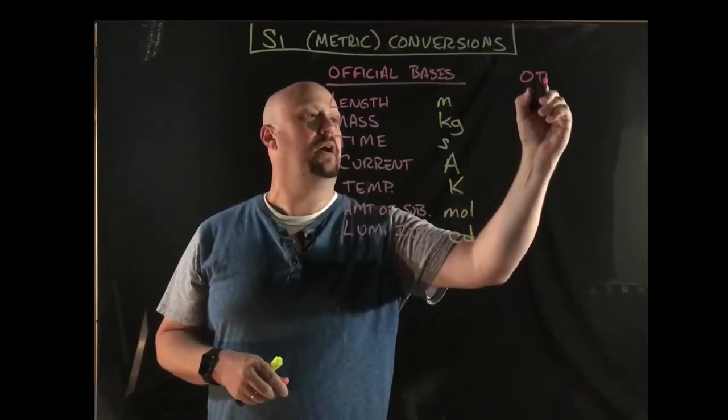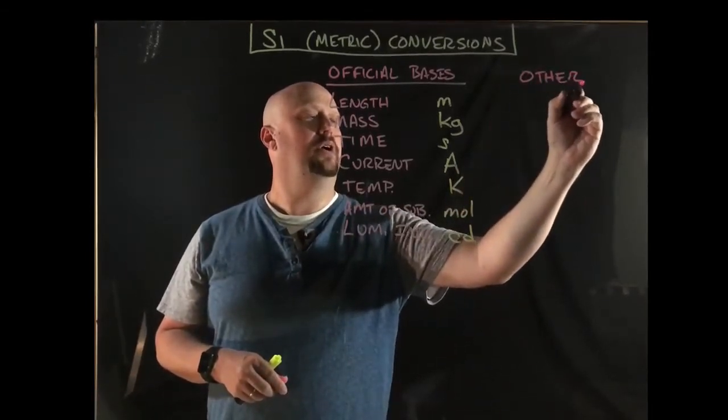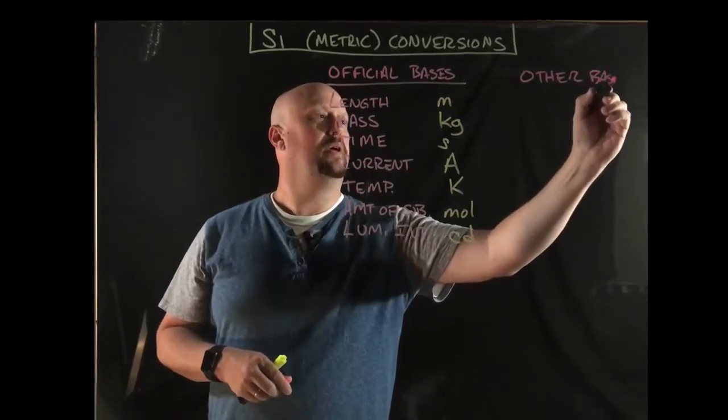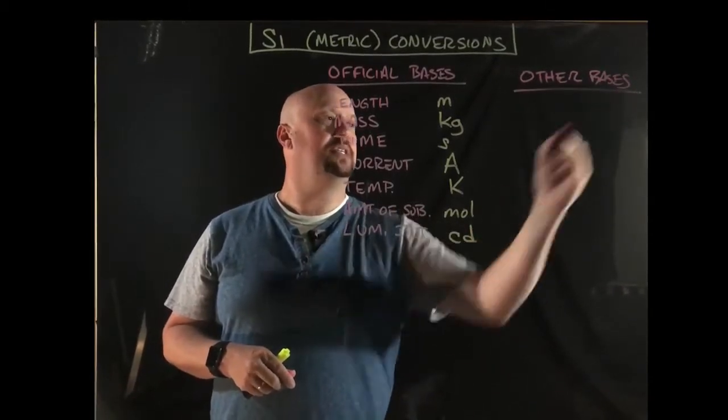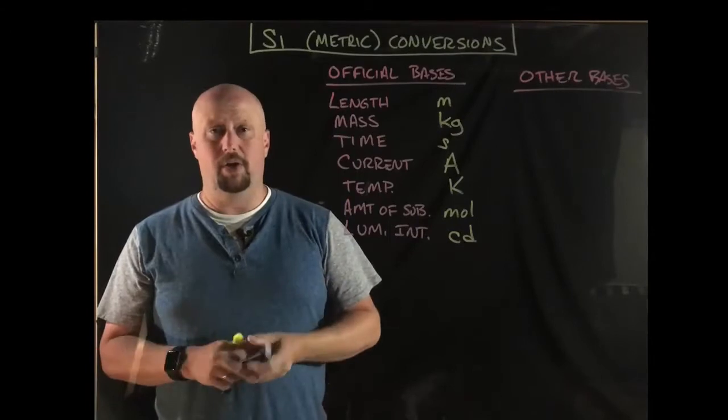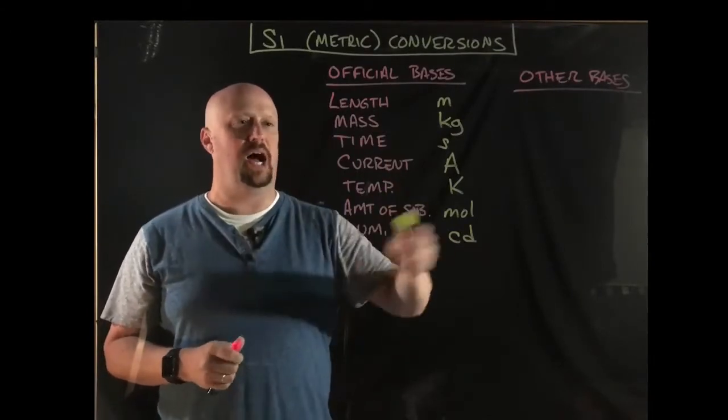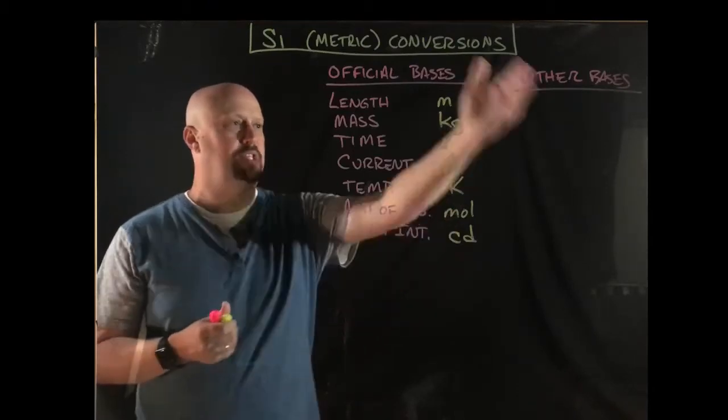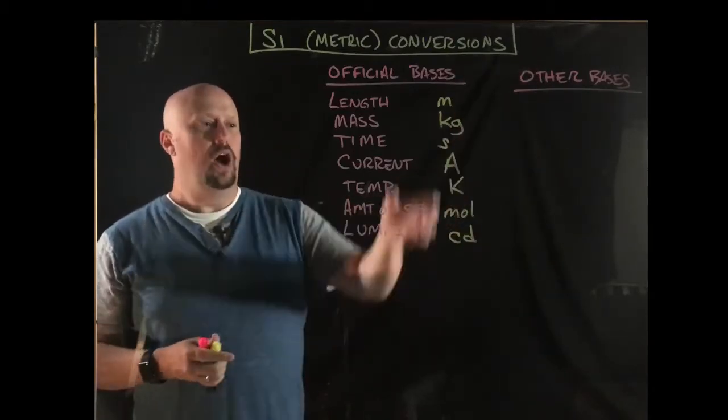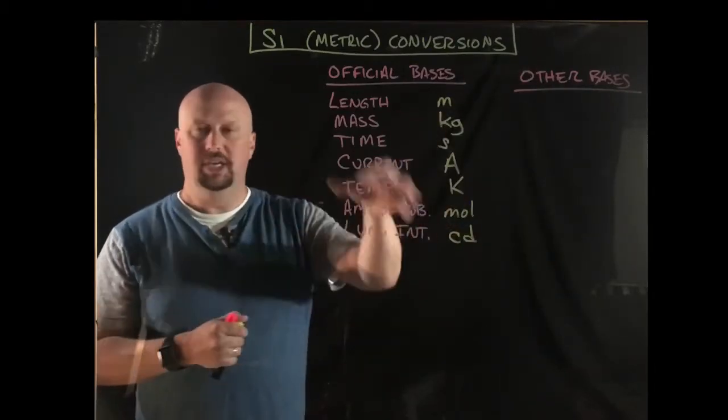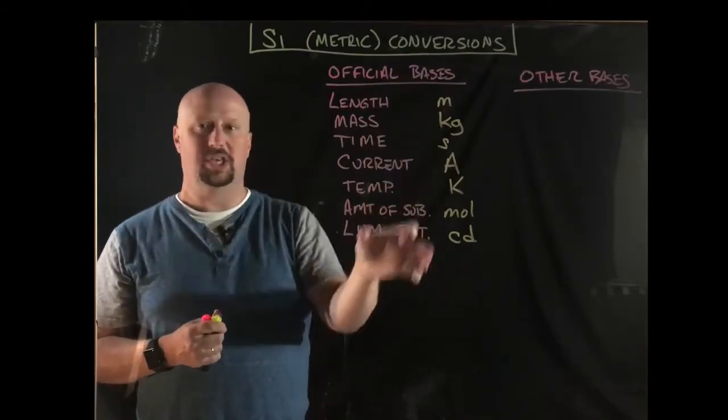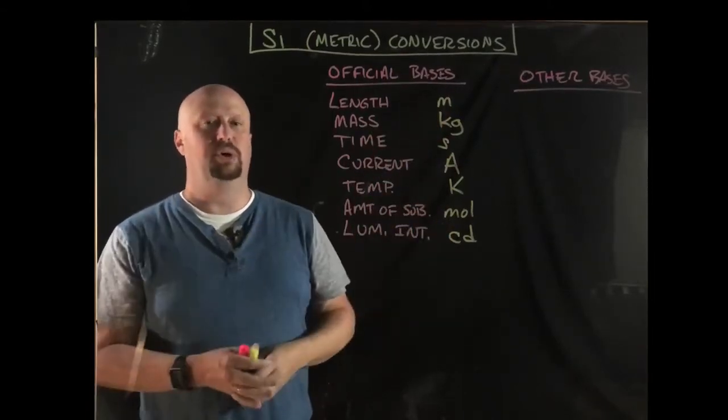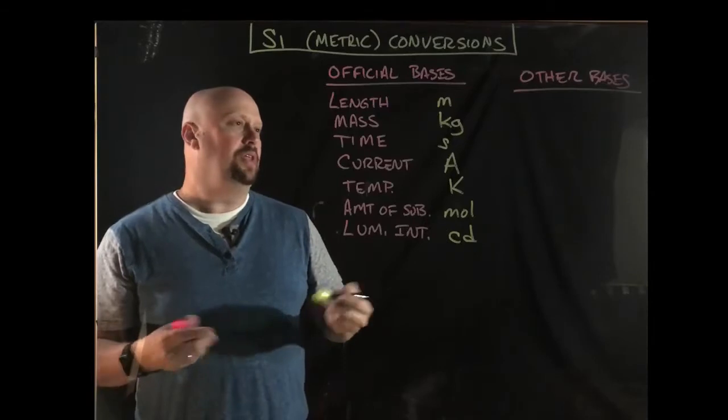So let's talk real quick about other bases. Now, most of these other bases, most of them, not all of them, but most of the other bases can be derived from these units. So what that means is that the units that are the other bases are some combination of these other ones. These are the essential ones, and everything else is built out of those.